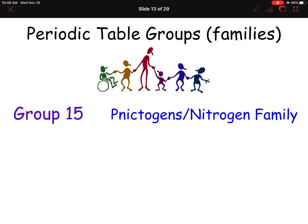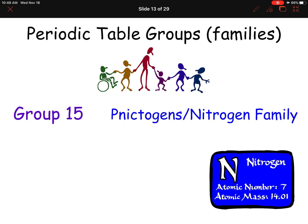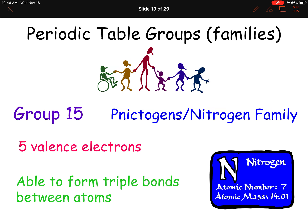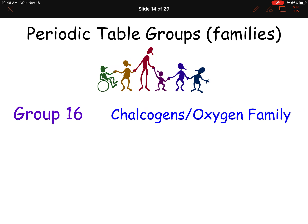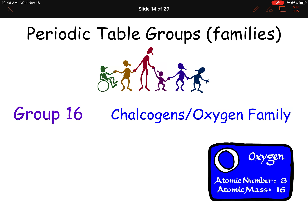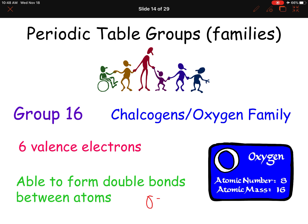Group 15 — if you're ever on Jeopardy, these are known as the pnictogens, also called the nitrogen family. Group 15 has five valence electrons. What's unique about nitrogen is that those kinds of atoms can form triple bonds between atoms — we're not there yet, but you'll see that later. Group 16 is known as the chalcogens or the oxygen family. Group 16 has six valence electrons. Oxygen can form double bonds between atoms. No need to color those.